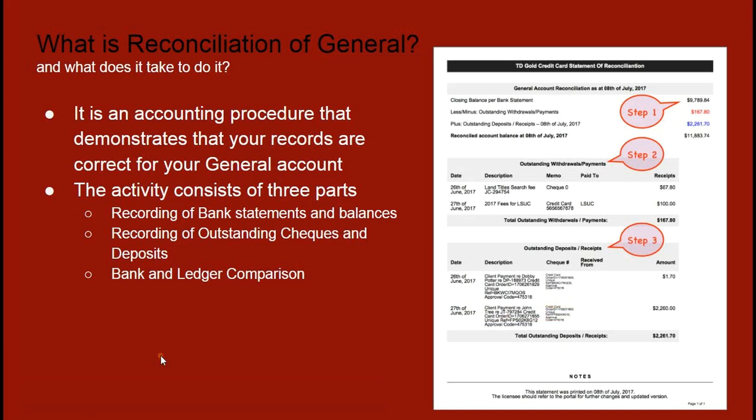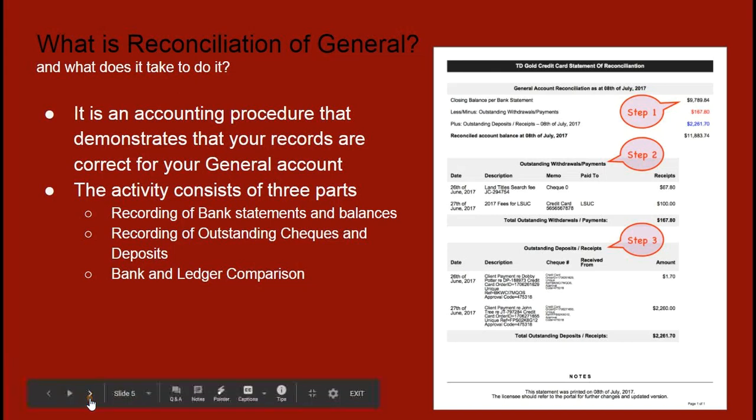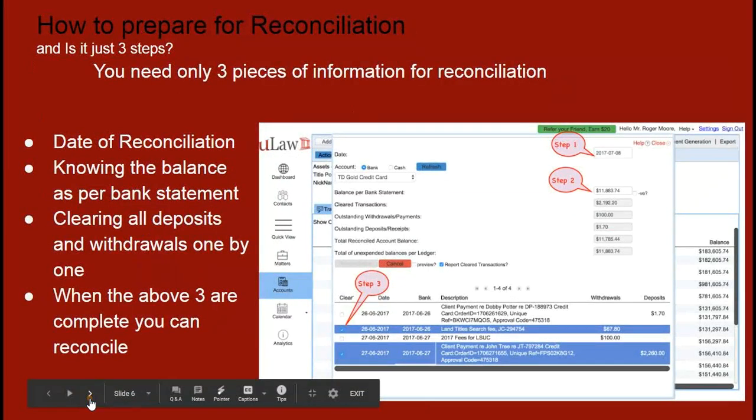In a general or operating account, you'll see trust transfers coming in, disbursements going out, office expenses, law society fees, equipment purchases — the source of ins and outs is more complex than in a trust account. We strongly recommend building general reconciliation as a habit alongside trust reconciliation — if you're reconciling trust monthly, make it a habit to do the general reconciliation monthly as well.